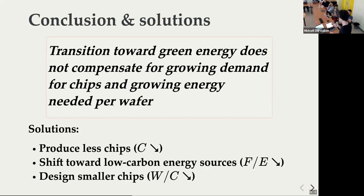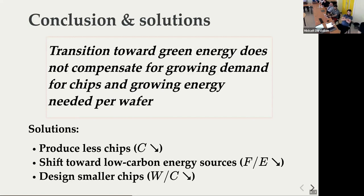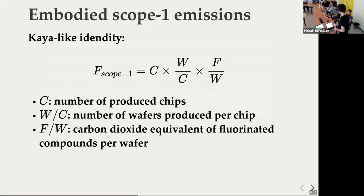The conclusion of scope two is that green energy does not compensate for growing demand for chips. Even in Europe, where we are moving to less carbon-intensive energy, it's not sufficient because we are producing a lot more chips that are also larger. Solutions include: producing fewer chips, shifting to renewable energy sources, and designing smaller chips — so that with the same wafer area and same energy, you simply get more chips per wafer.